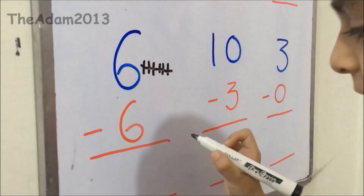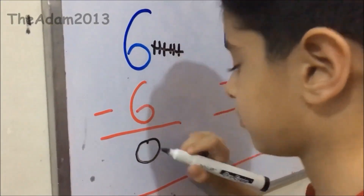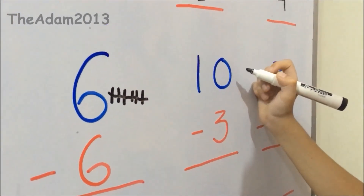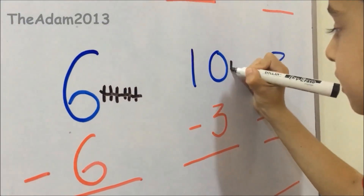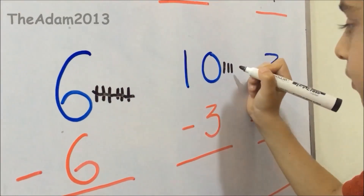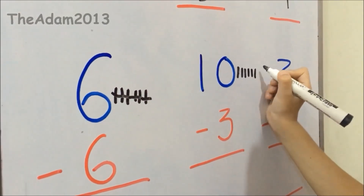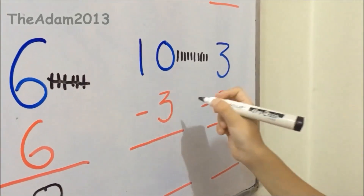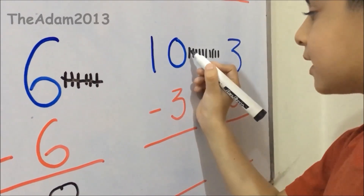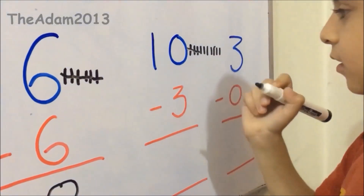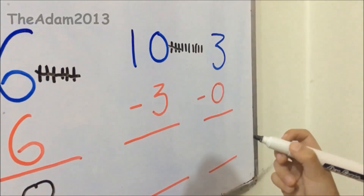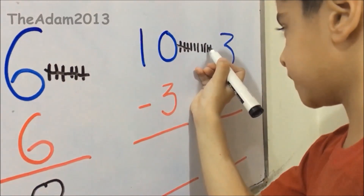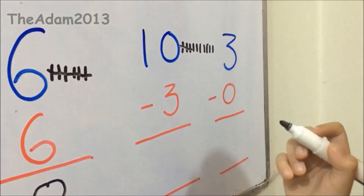Now I will write here. Friends, you will write here — we have 10 lines. 1, 2, 3, 4, 5, 6, 7, 8, 9, 10. Friends, we have cut 3 lines — 1, 2, 3. Friends, you can write how many are left — 1, 2, 3, 4, 5, 6, 7. Friends, you can write 7 lines.